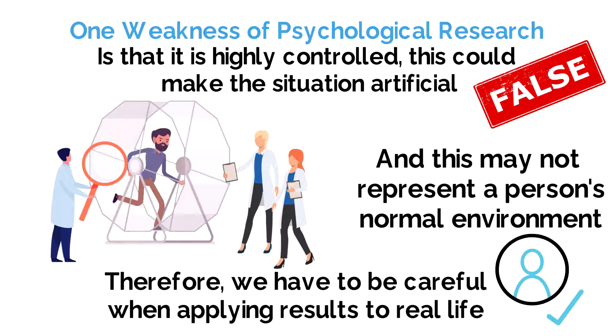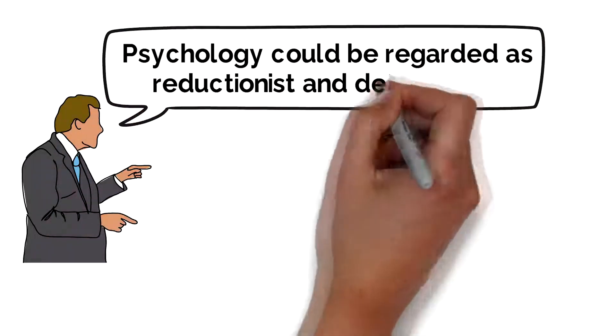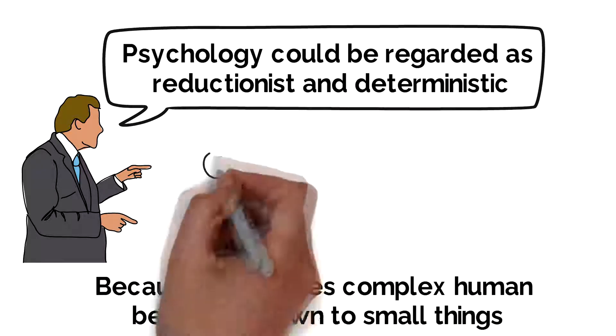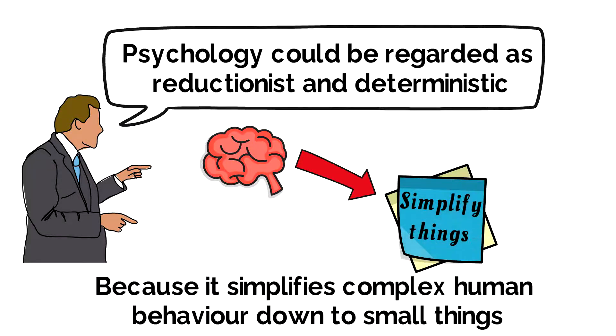because there could be demand characteristics or social desirability bias. Another weakness is that it could be regarded as reductionist and deterministic, because it assumes that everyone's behaviour follows the same patterns, and simplifies complex human behaviour down to very small factors, rather than looking at wider context.